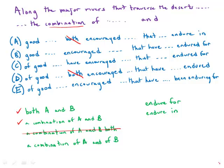But also in particular, something sounds funny about saying a combination of A and of B, almost as if each one separately is some kind of combination, and that's not what we mean at all. So that is wrong.